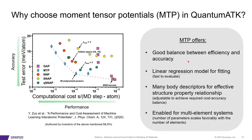This means MTP offers a good balance between efficiency and accuracy compared to all other models in the market. It uses linear regression, which is very quick to evaluate and efficient for large systems. Many-body descriptions are available which can be tuned for higher accuracy or lower cost, and it is already enabled for multi-elemental systems, so we won't be bothered by the curse of dimensionality.